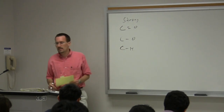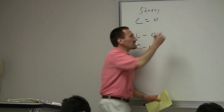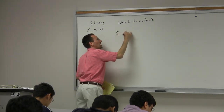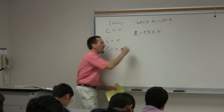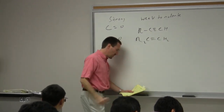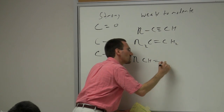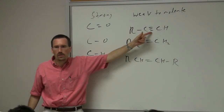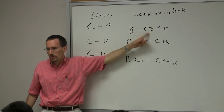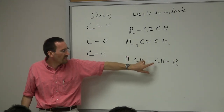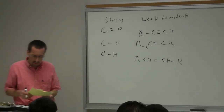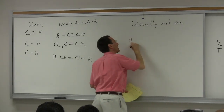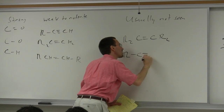Peaks that are often weak or moderate include alkyne carbon-carbon triple bond stretches and alkene carbon-carbon double bond stretches — terminal and internal. If there's no change in dipole moment, you won't see the stretch. An alkyne with two alkyl groups on the end: you almost certainly won't see the CC triple bond stretch. An alkene that's tetra-substituted: you probably won't see the CC double bond stretch. So internal alkenes and internal alkynes are usually not seen.